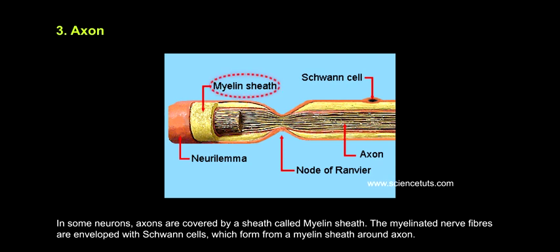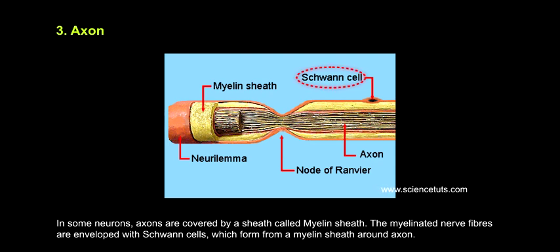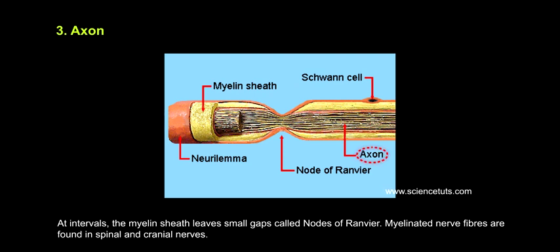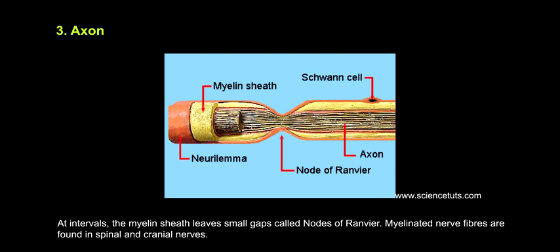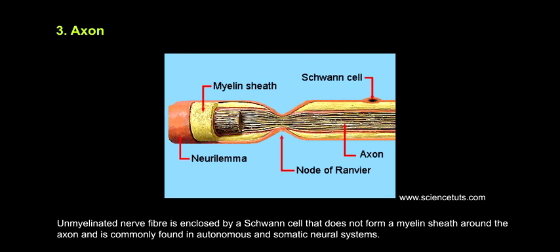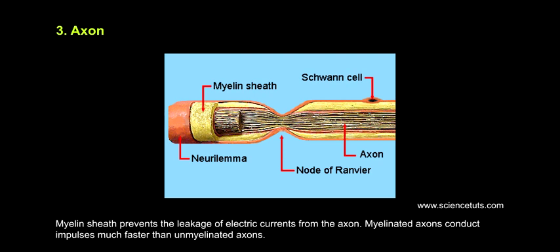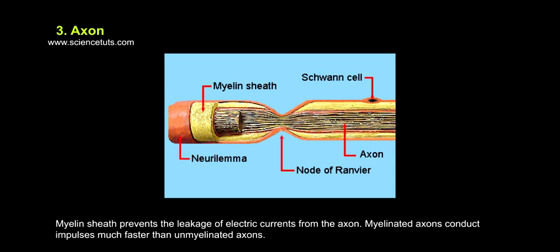In some neurons, axons are covered by a sheath called the myelin sheath. The myelinated nerve fibers are enveloped with Schwann cells, which form a myelin sheath around the axon. At intervals, the myelin sheath leaves small gaps called nodes of Ranvier. Myelinated nerve fibers are found in spinal and cranial nerves. Unmyelinated nerve fibers are enclosed by a Schwann cell that does not form a myelin sheath and are commonly found in autonomic and somatic neural systems. Myelin sheath prevents leakage of electric currents from the axon, and myelinated axons conduct impulses much faster than unmyelinated axons.